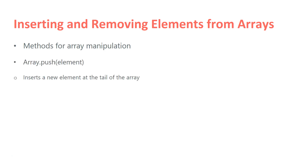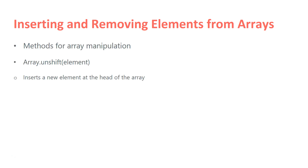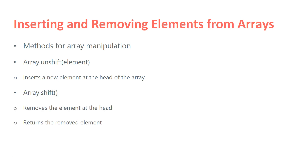Methods for array manipulation: we have array.push with some element, which inserts a new element at the tail of the array. We have array.pop, which removes the element at the tail and returns the removed element. We have array.unshift, which inserts a new element at the head of the array, and array.shift, which removes the element at the head and returns the removed element.